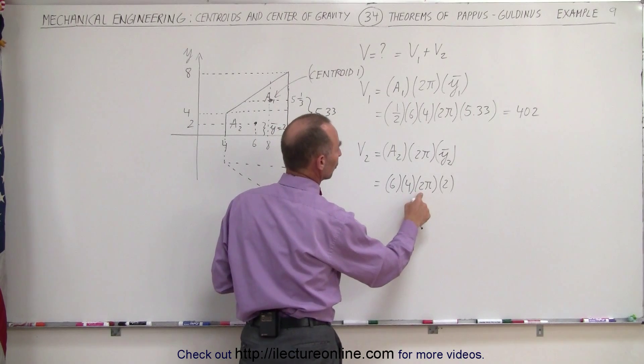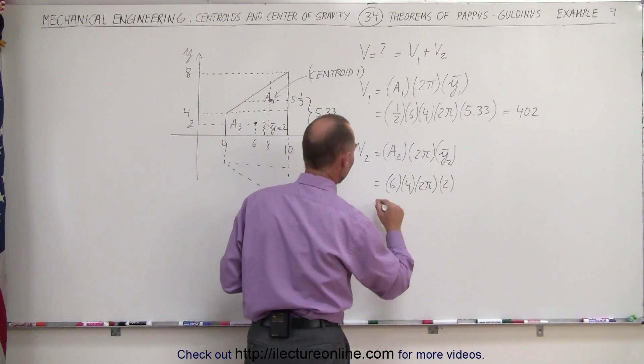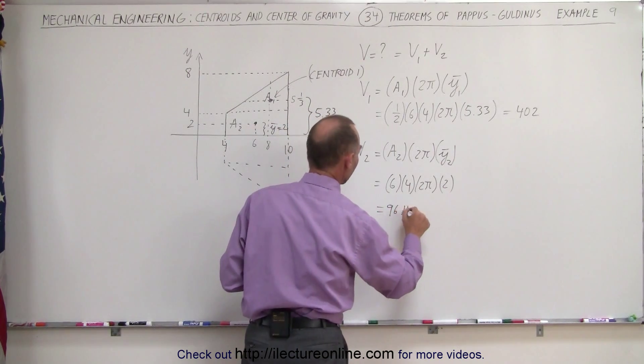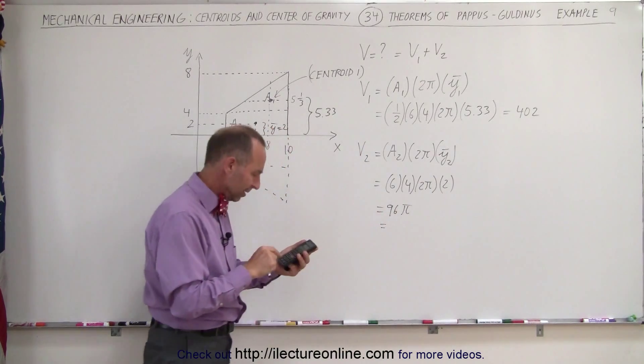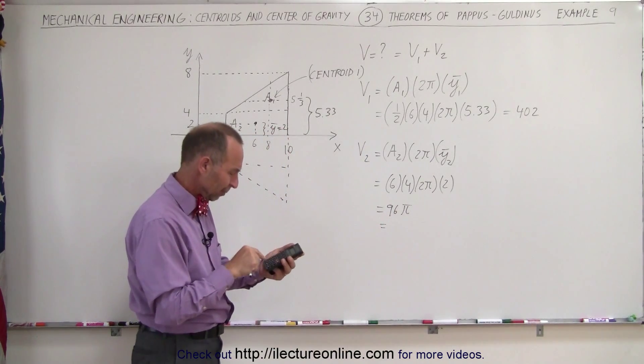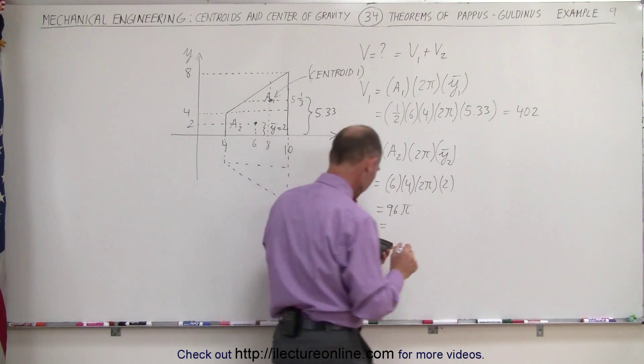24 times 2 is 48 times 2, which is 96. 96π, the volume for that, 96 times π equals 302.